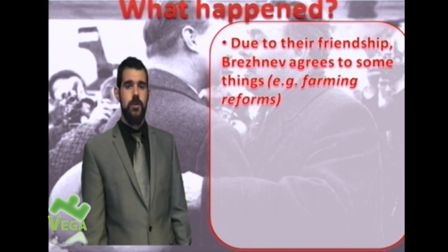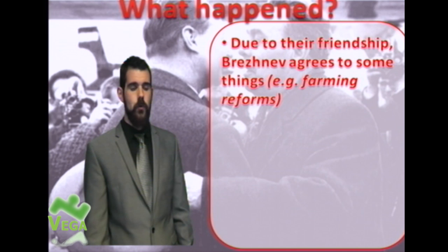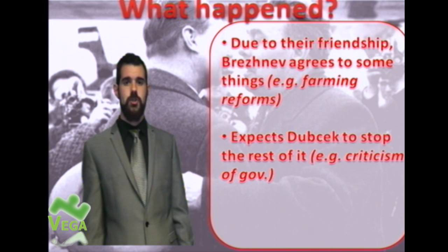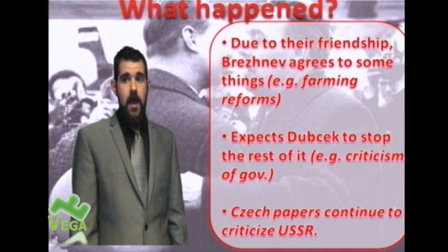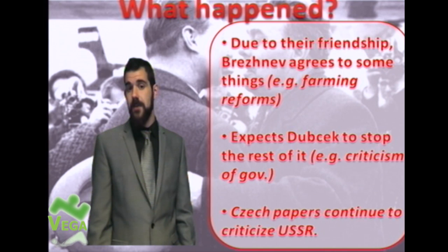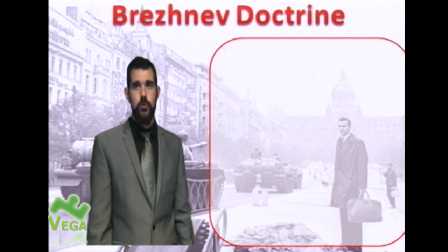Due to their friendship, Brezhnev does somewhat agree when they meet. He says the farming reforms and some things like trade union membership are acceptable. But in return for generously allowing these reforms, he expects Dubček to stop the rest — particularly criticism of the government. However, newspapers continue to criticise the USSR. Dubček is either unwilling or unable to control them, and Brezhnev is not happy at all.